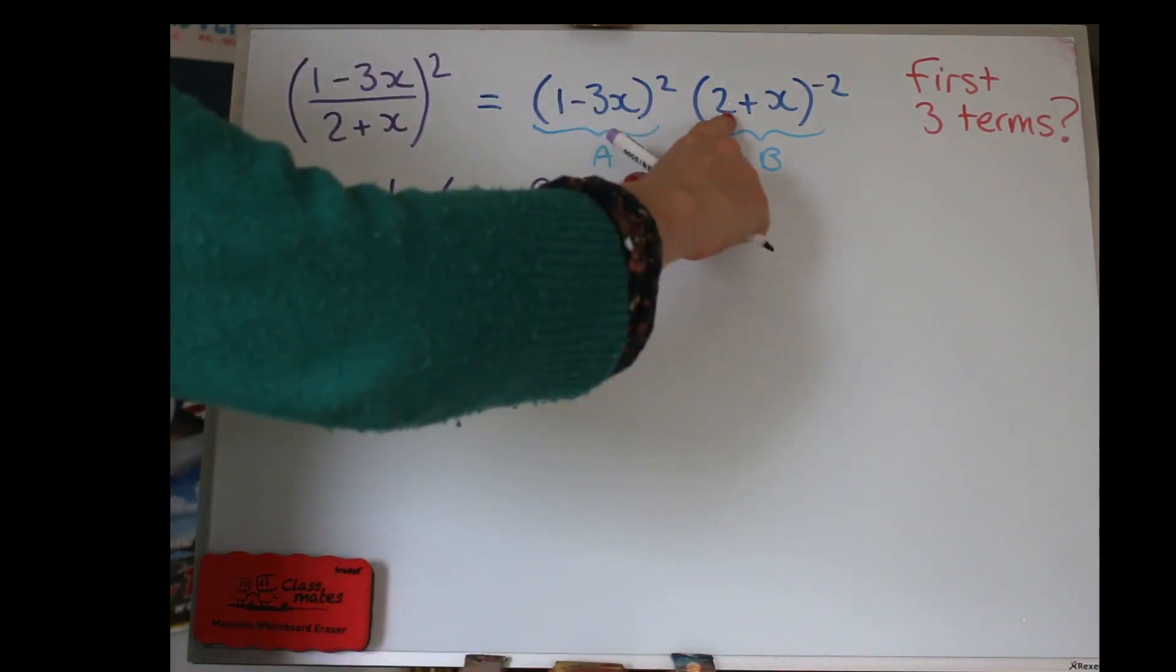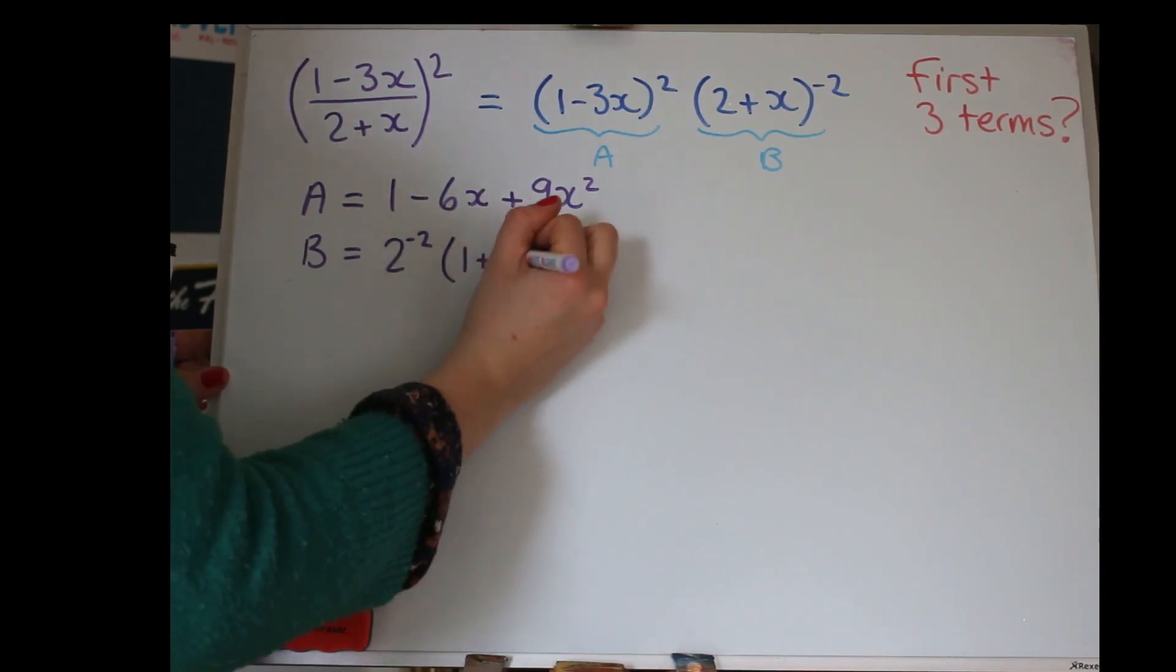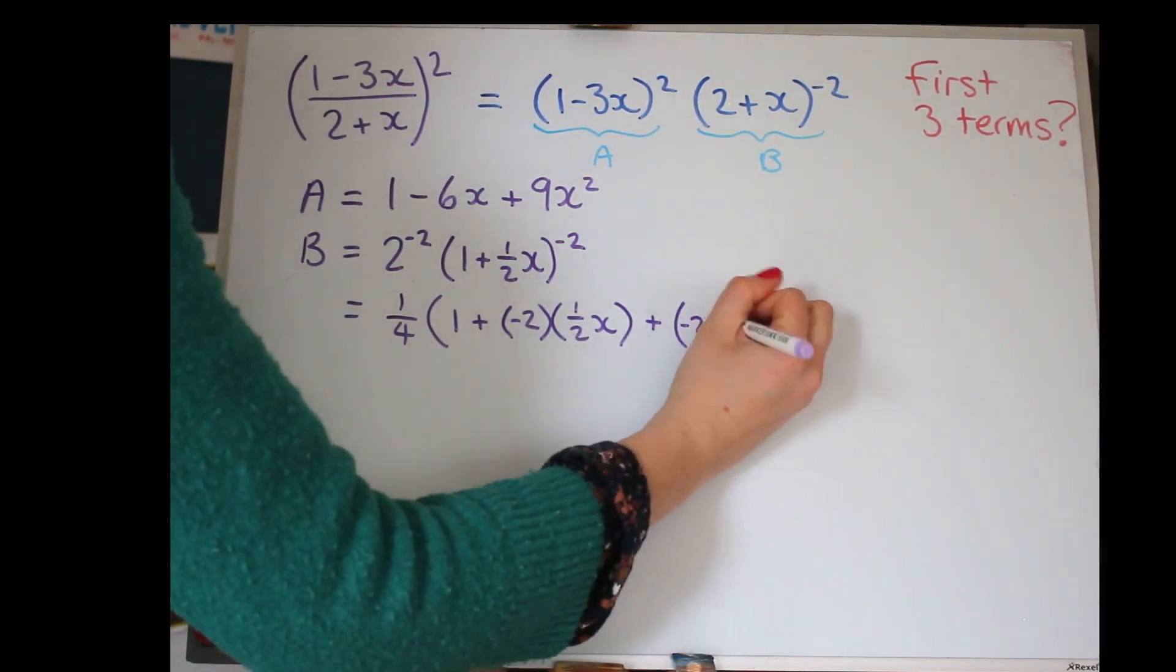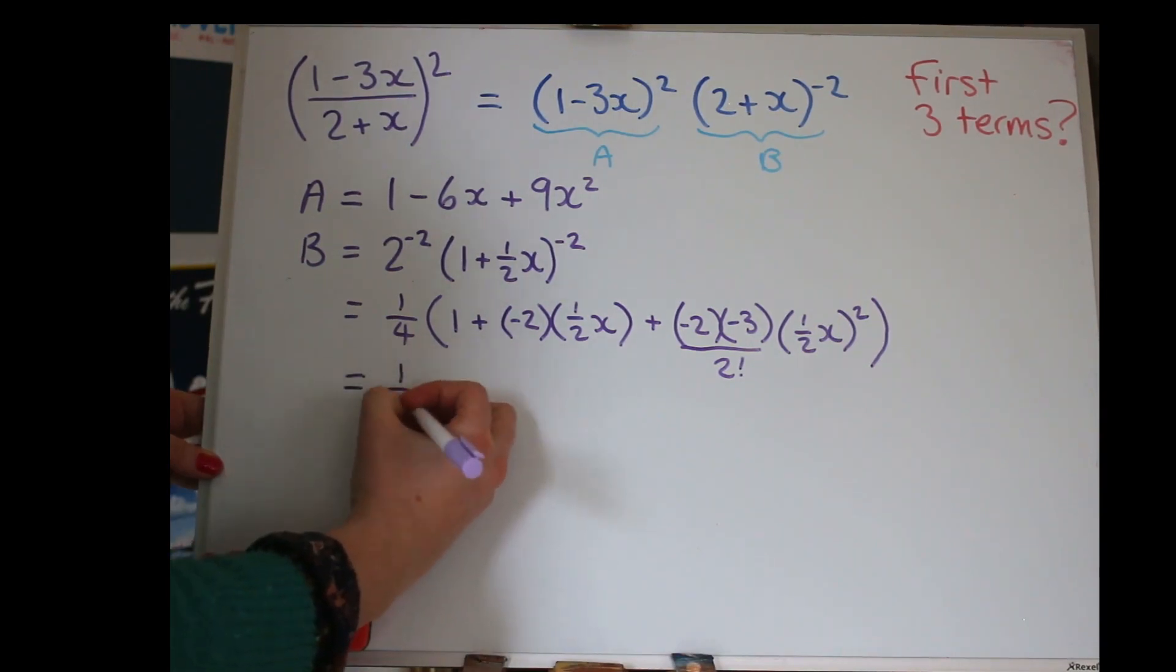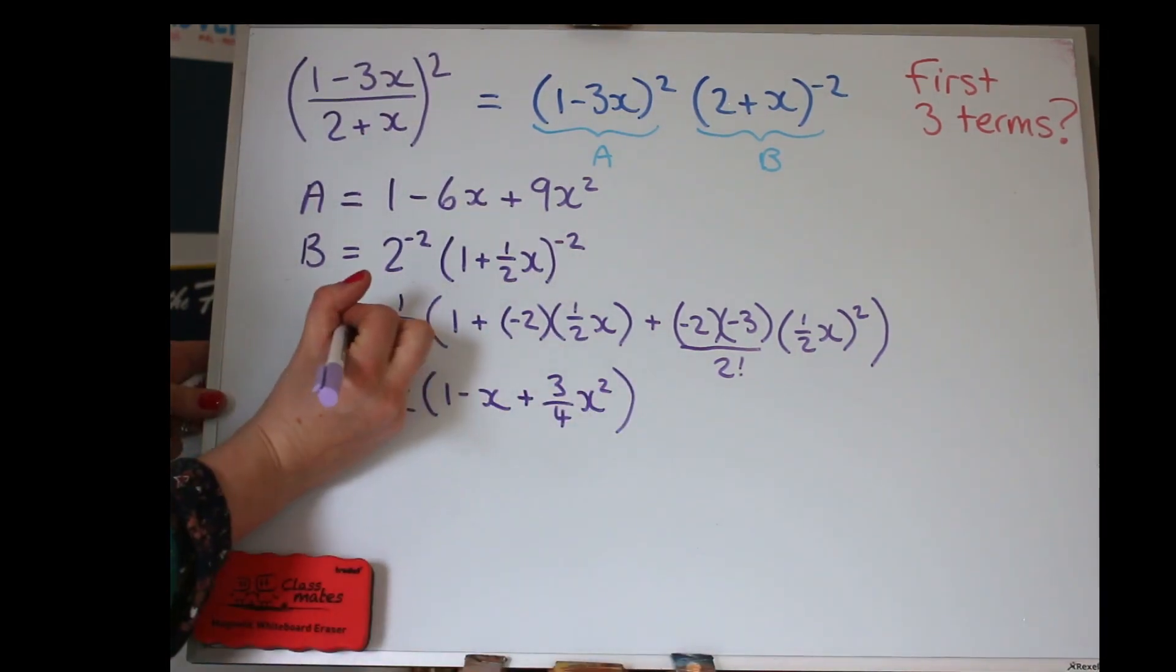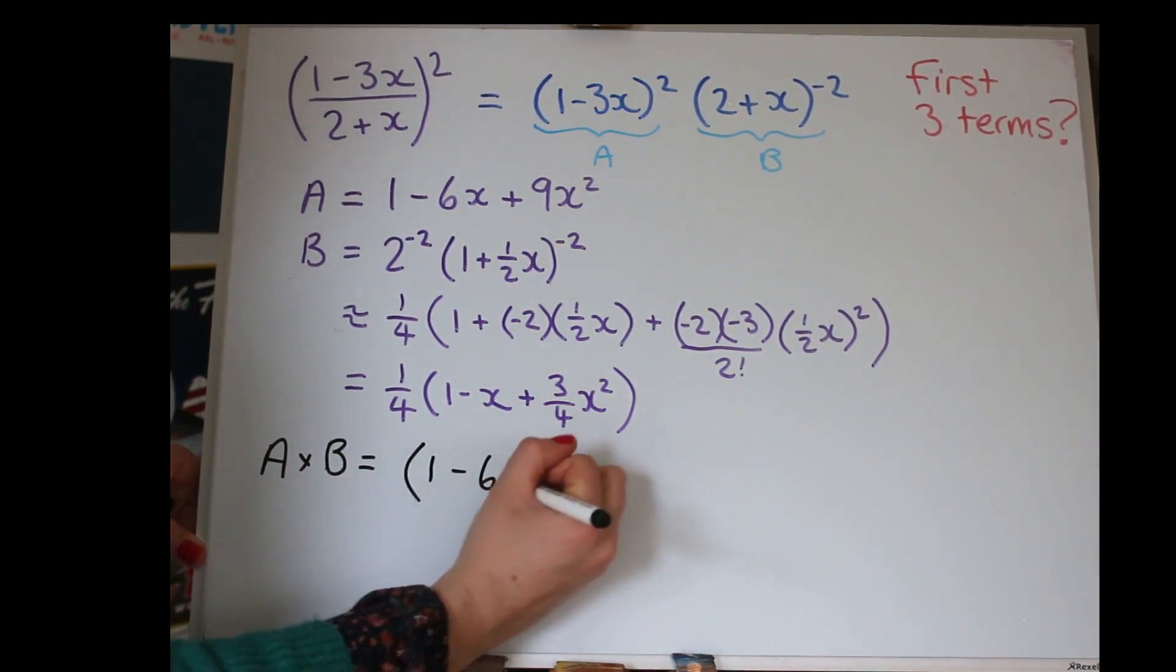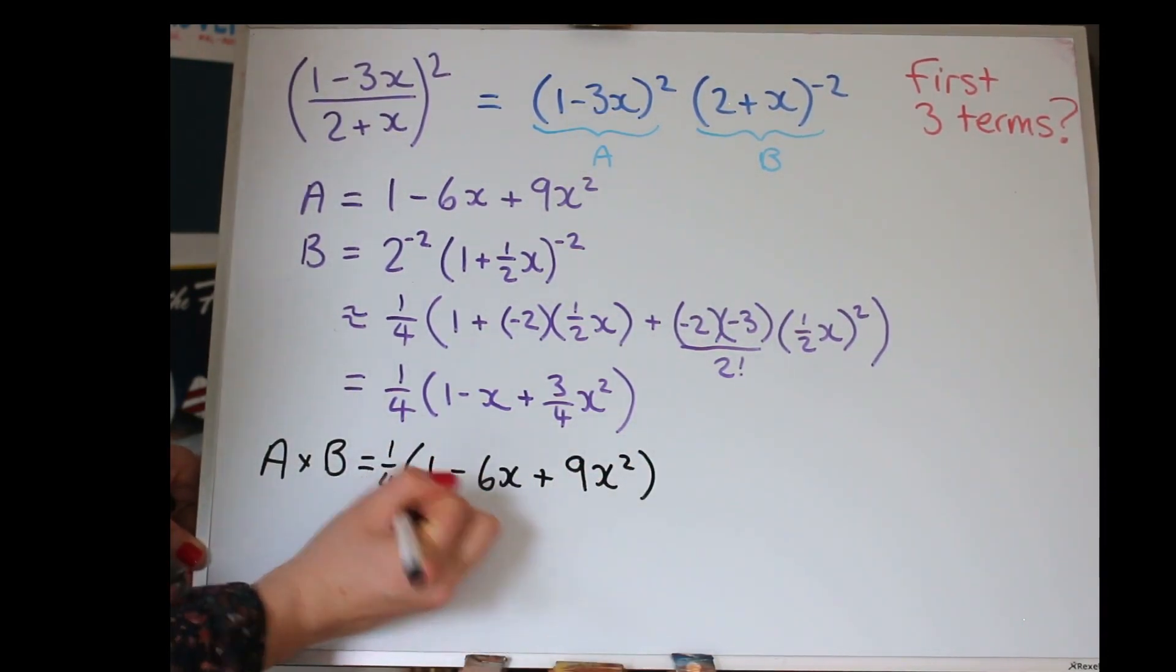So, remember, it'll have the power attached to it as well. And then we can use the formula. So, have a go at that. Simplifying that. I should have put an approximation sign here because we're only doing the first three terms. Okay, now, to get the whole thing, we need to do A multiplied by B. So, we've got two expansions multiplying with each other. I'm going to put the quarter right at the front of all of it, just out of the way.